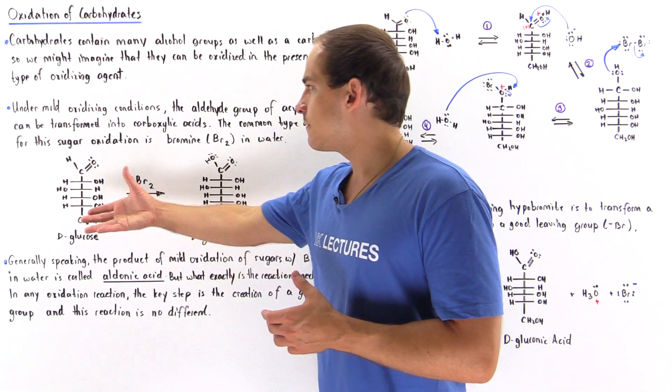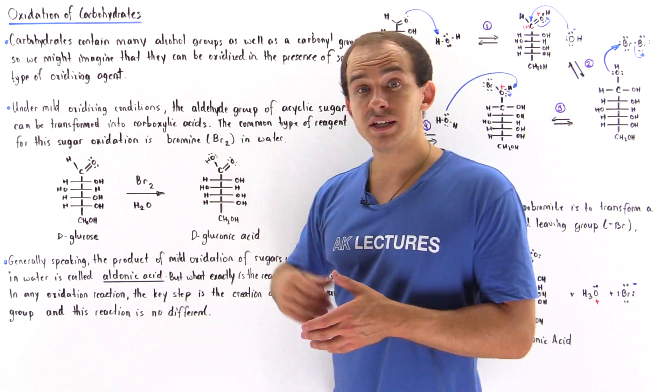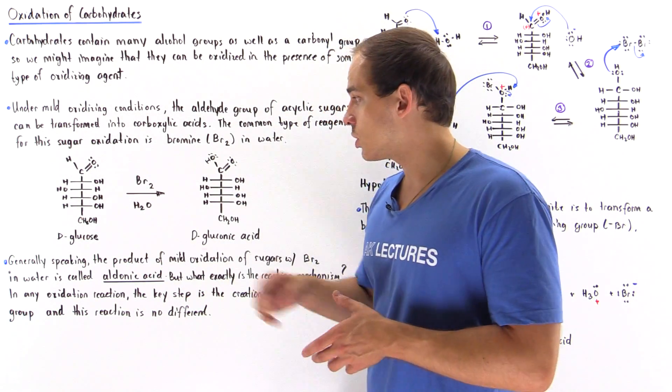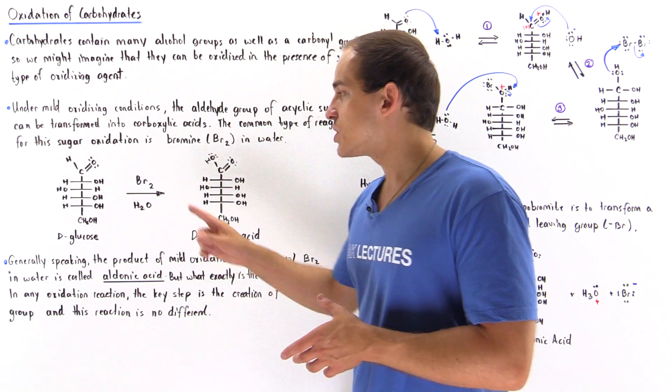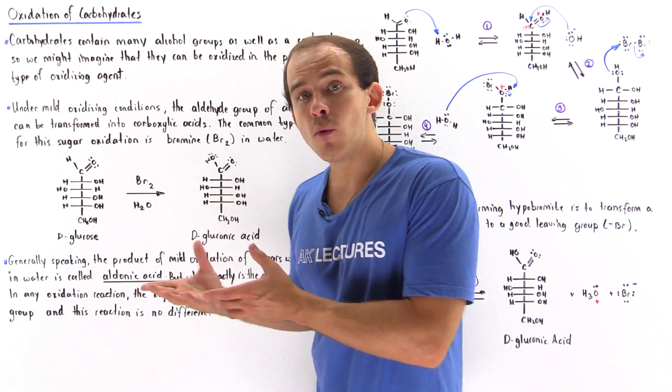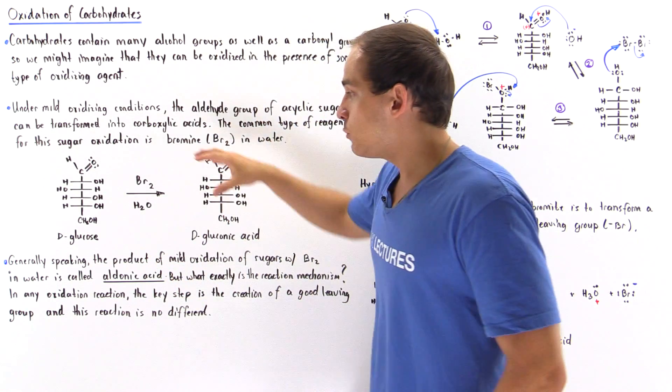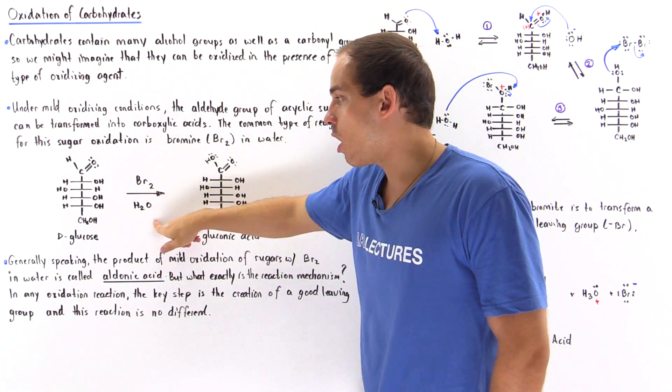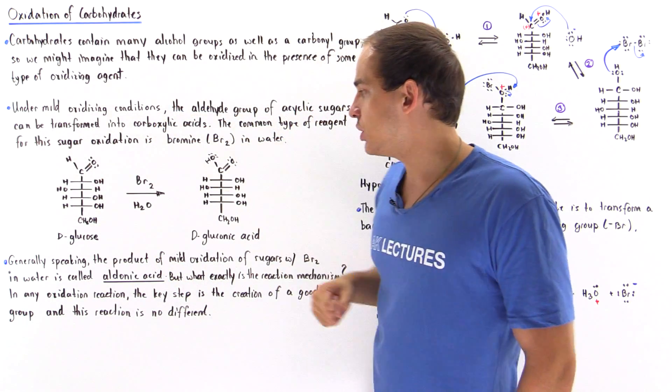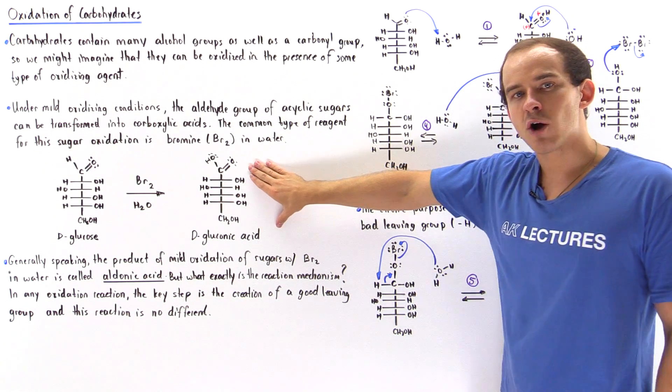Basically if we take the following sugar, let's suppose D-glucose, a very common sugar. Notice that D-glucose must be in the open chain, the acyclic form. If we place bromine in water into our mixture with D-glucose, we produce our product.